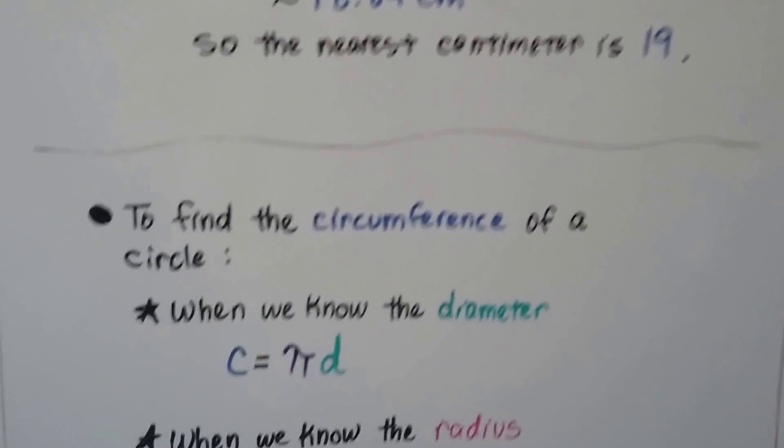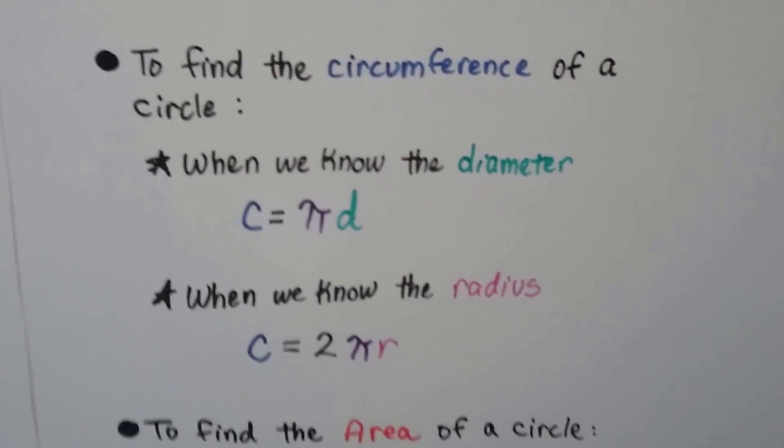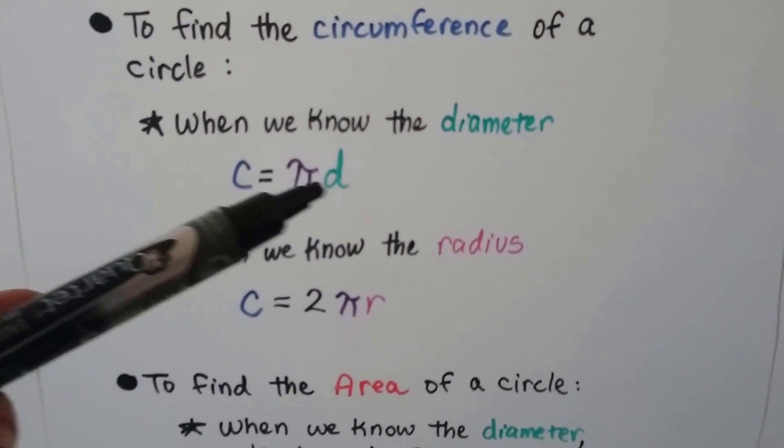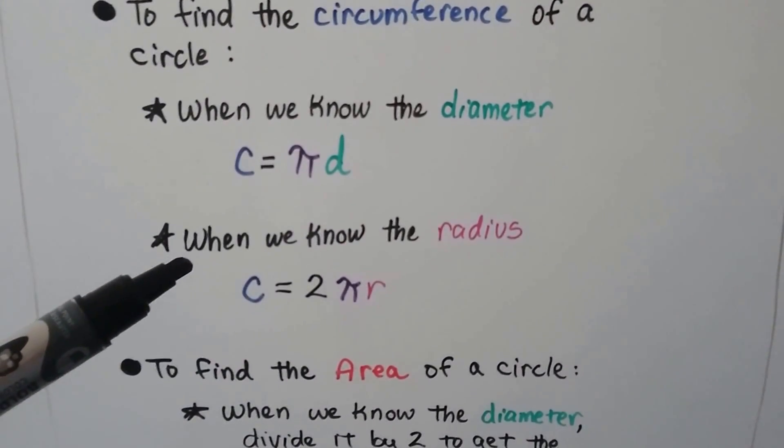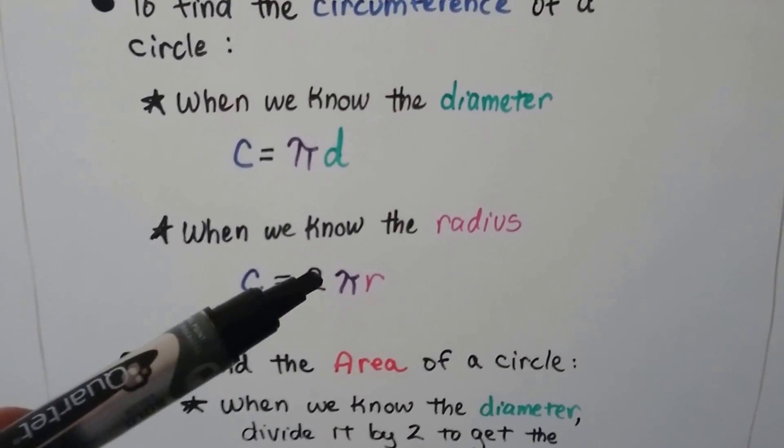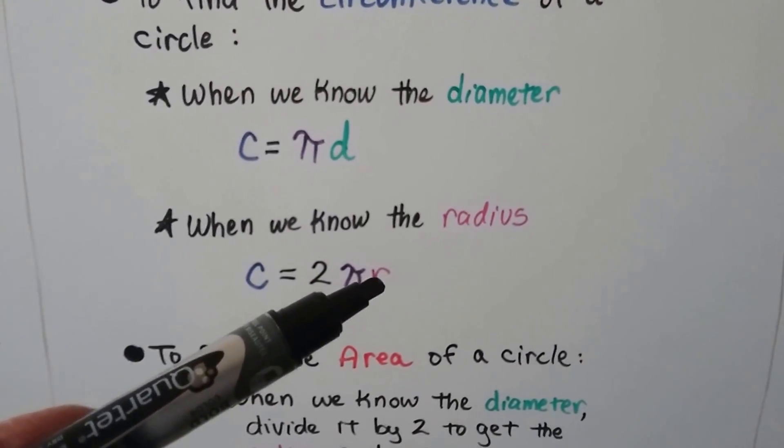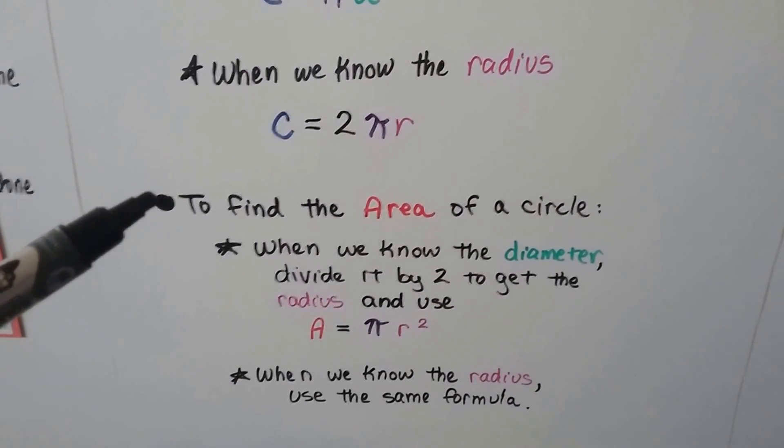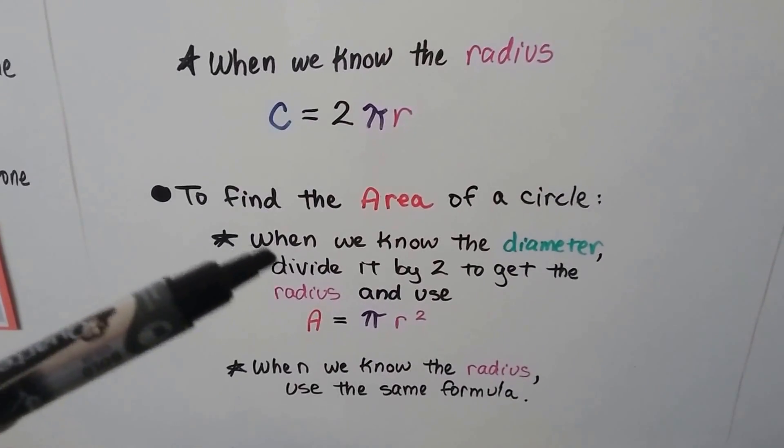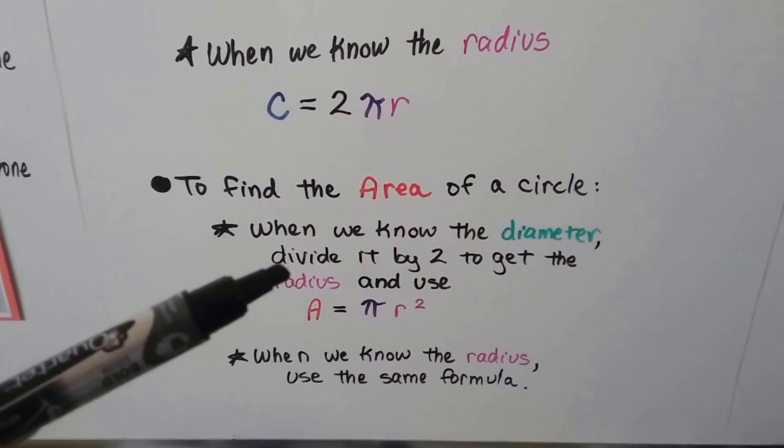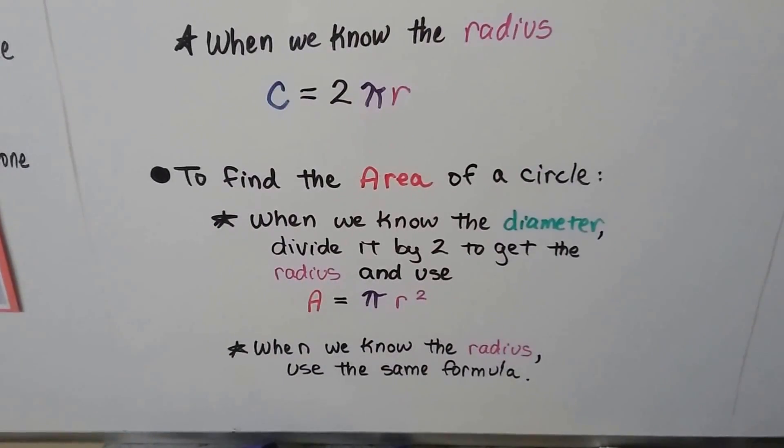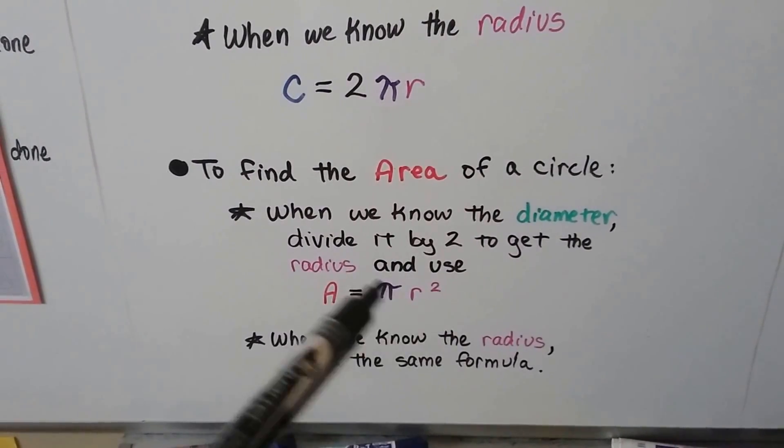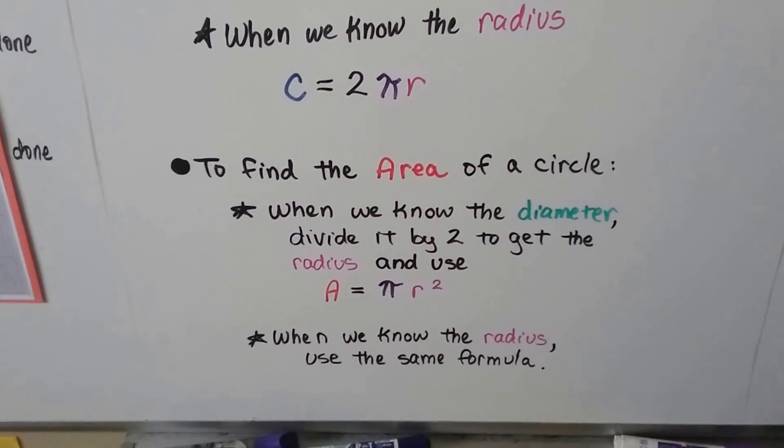So if you're taking notes, to find the circumference of a circle, when we know the diameter, we use c equals pi d. When we know the radius, we use c equals 2 pi r. To find the area of a circle, when we know the diameter, we divide that diameter by 2 to get the radius, and then use area equals pi r squared. When we know the radius, we use the same formula. We just don't have to do anything to it. We just plug the radius in.